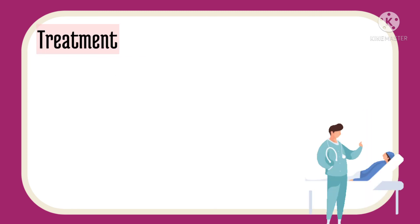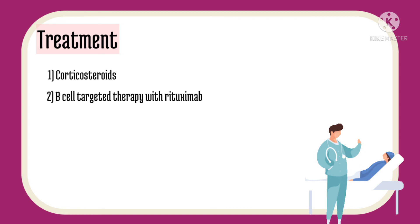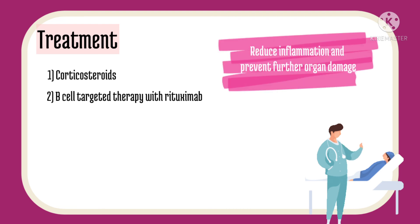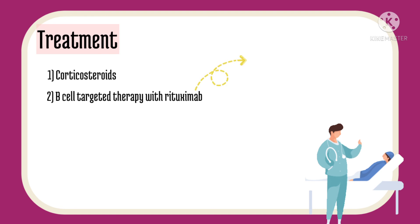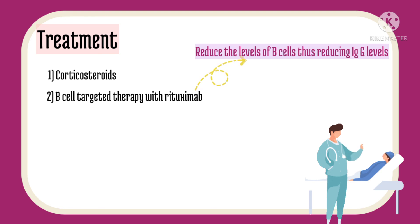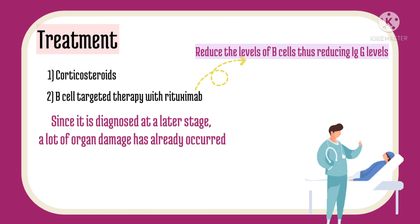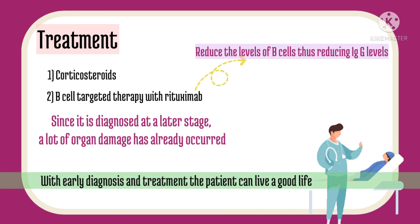IgG4 related disease is treated mainly with corticosteroids and B-cell targeted therapy with rituximab. The treatment aims to reduce inflammation and help control and prevent further organ damage. Rituximab is given to reduce the levels of B cells, which effectively helps in reducing IgG4 levels. Since this disease is usually diagnosed at a later stage, a lot of organ damage has already occurred. IgG4 disease cannot be cured, but with early diagnosis and proper treatment, the patient can lead a good life.